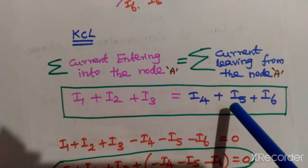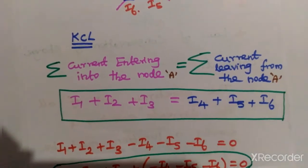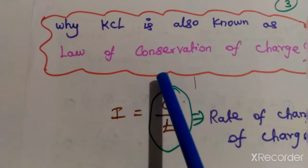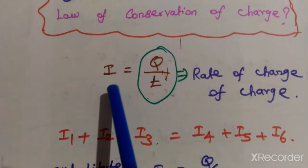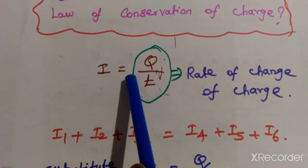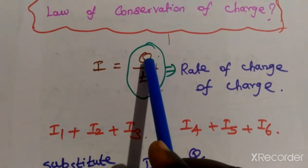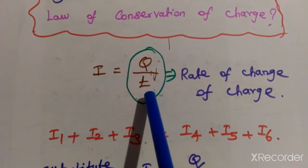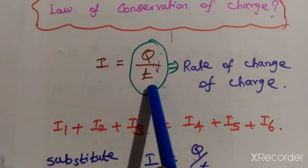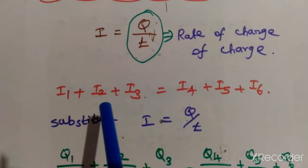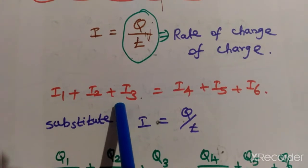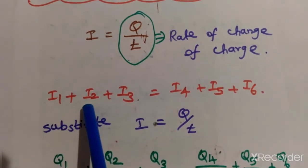Now let us see why KCL is also known as the law of conservation of charge. We know that current i is nothing but the rate of change of charge — that is, charge changing with respect to time. The flow of charge is called current. From the previous statement, i1 plus i2 plus i3 equals i4 plus i5 plus i6.